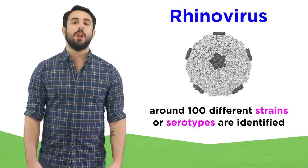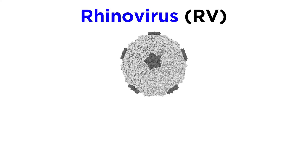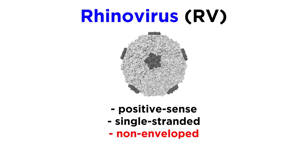Rhinovirus, which is sometimes referred to as RV, was isolated back in 1956 by Dr. Winston Price at Johns Hopkins University. The virus itself is what's referred to as a positive sense, single-stranded, non-enveloped RNA virus, belonging to the picornavirus family.